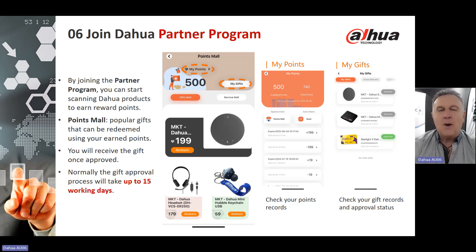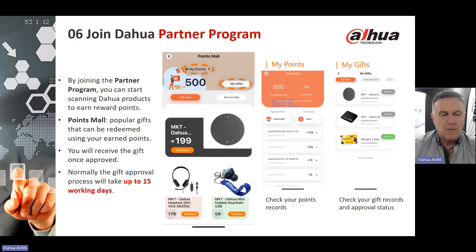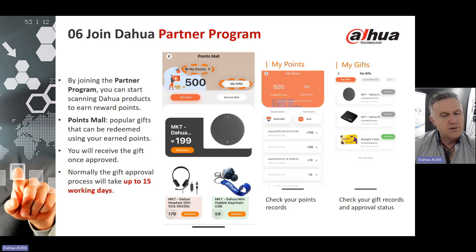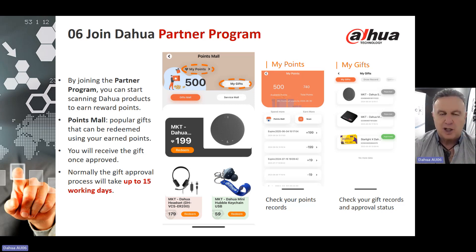By joining the Partner Program, you can start scanning Dawah products and earn reward points — that's what happens when you are loyal to the Dawah product line. Popular gifts can be redeemed using your earned points, and you will receive the gift once it has been approved. The gift approval process will normally take up to 15 working days once you have redeemed or attempted to redeem that particular prize.